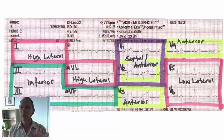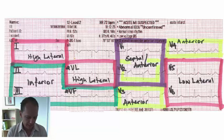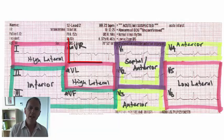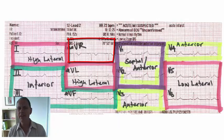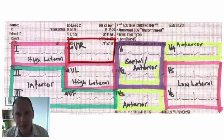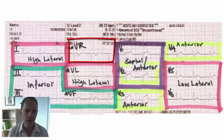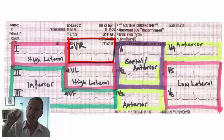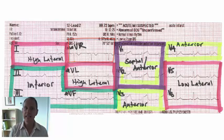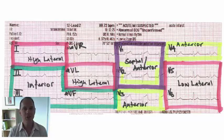V2, V3, and V4 are your anterior leads of the heart. Now, what about AVR? A lot of people wonder about AVR, but let's not focus too much on that for the moment. One of the most useful things to look at in AVR is whether the QRS complex is negative — is it facing down? If it is, that's good, because it shows that you've got your limb leads on the right way around.